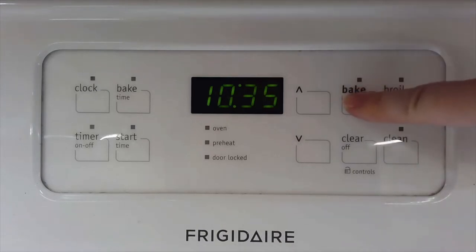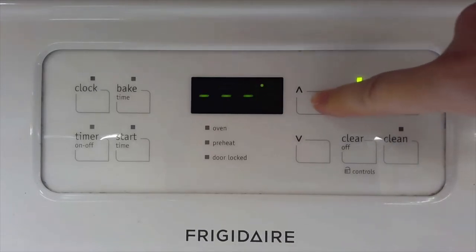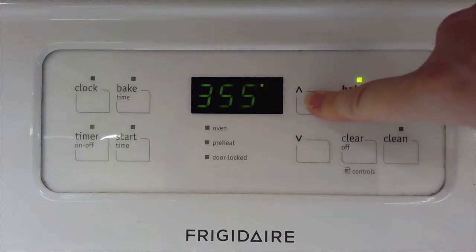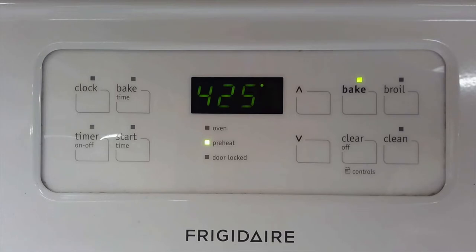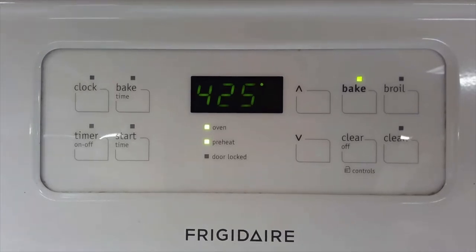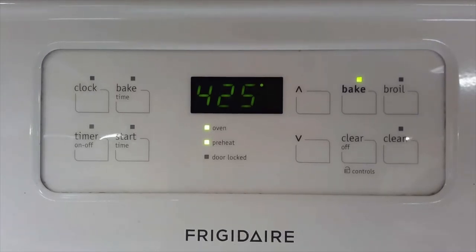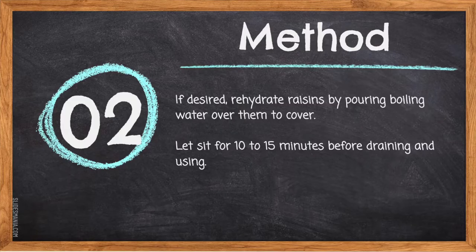When setting the oven temperature, press the bake button then use the arrows to go up to 425 degrees. The oven temperature for baking biscuits is usually quite hot — this ensures the biscuits will rise quickly, forming layers which are characteristic of a good product.